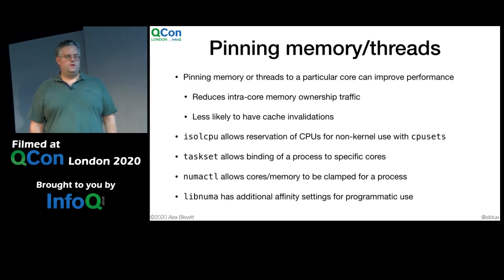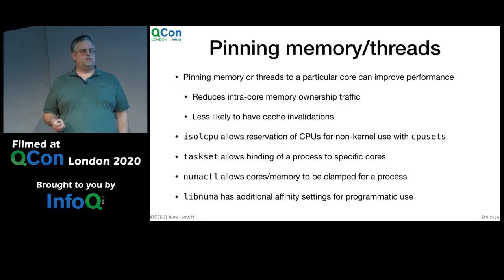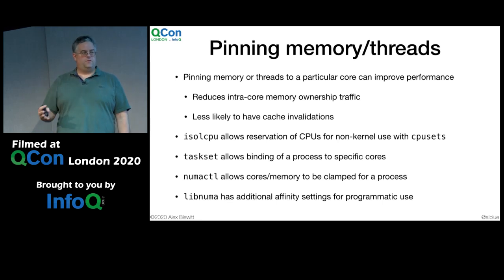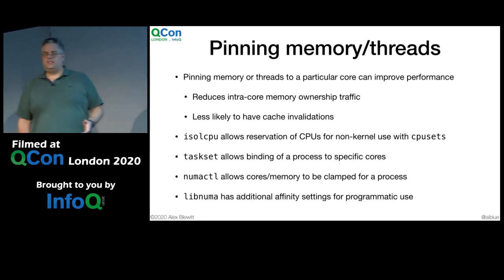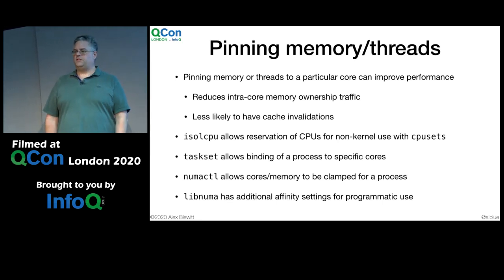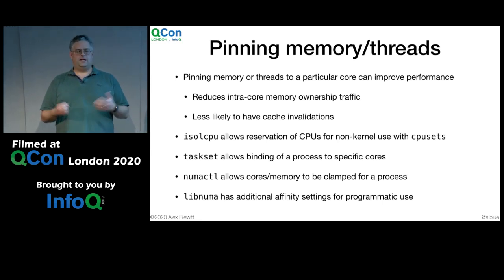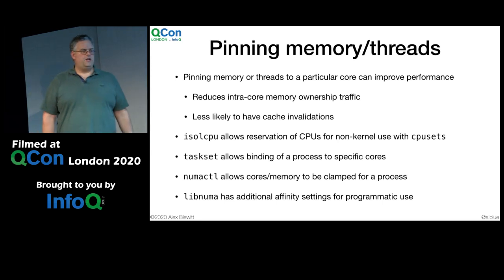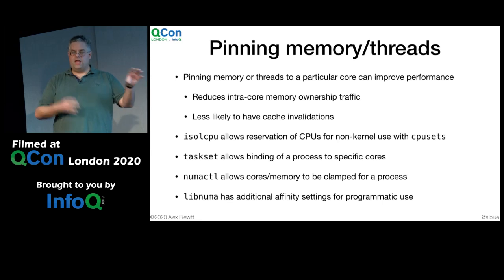You can also pin where memory and threads live. For massively scalable systems, pin threads to specific cores. For something like a Netty benchmark consuming events over a network socket, pin worker threads so each lives on a specific core — you'll never get them swapped around. Use ISOCPUs (a boot-time option) to tell the Linux kernel to do its housekeeping on a subset of cores, and task sets to assign processes to specific CPU sets. NumaControl and LibNuma let you programmatically control where large memory chunks are allocated, using sub-NUMA clusters to decide placement.